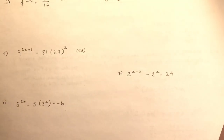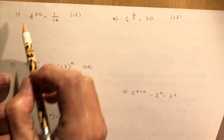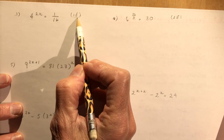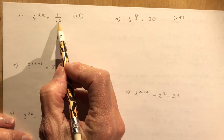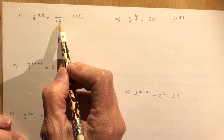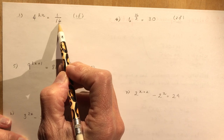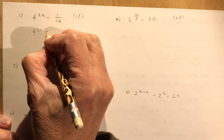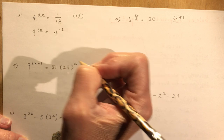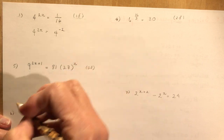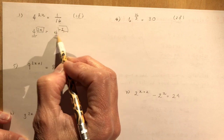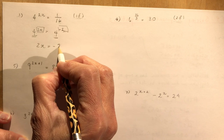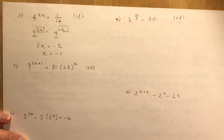Now, question 1f from the Nelson textbook: 4^(2x) = 1/16. When working with questions like this, try to find a common base. You know 16 can be written with a base of 4: 1/16 = 4^(−2). So 4^(2x) = 4^(−2). Once the bases are the same, equate the exponents: 2x = −2, so x = −1. Much easier than you thought!